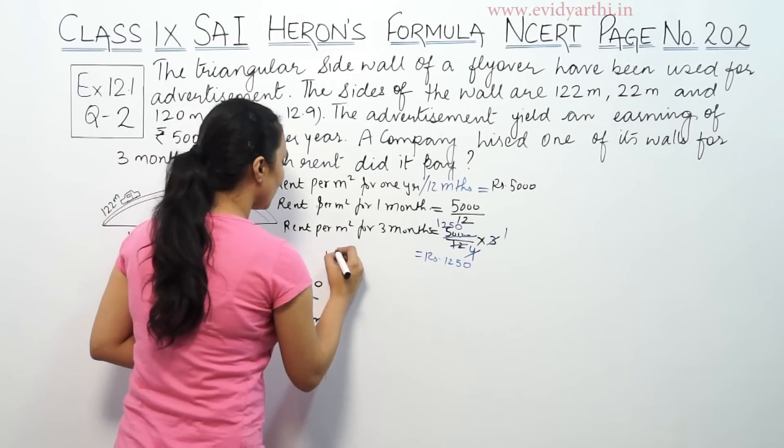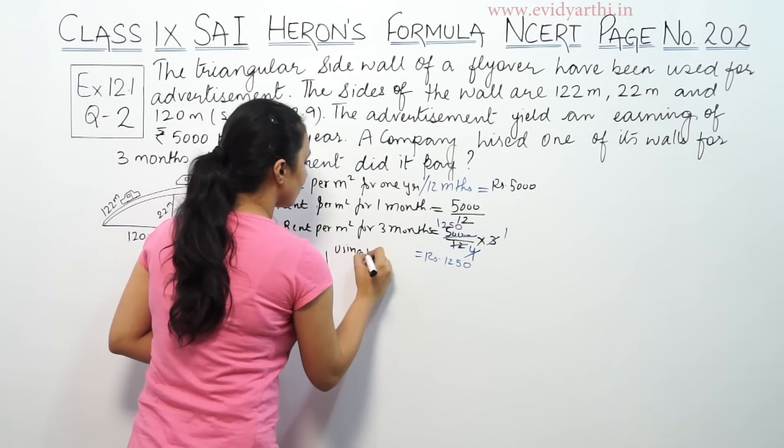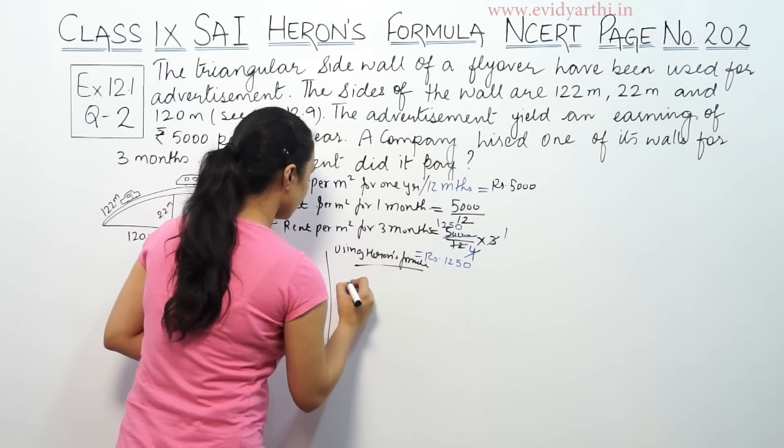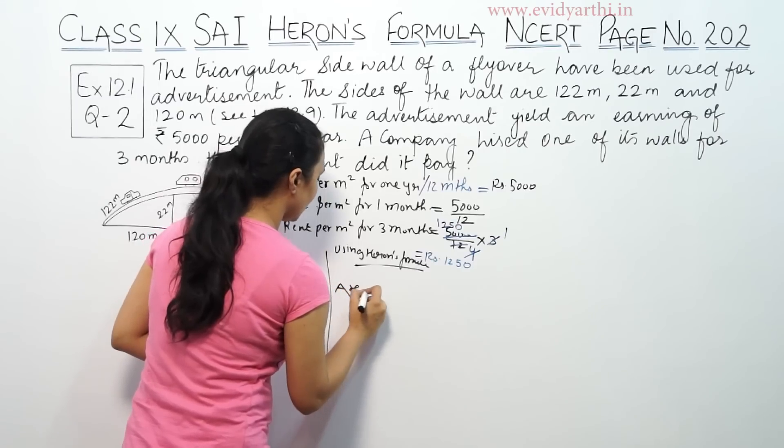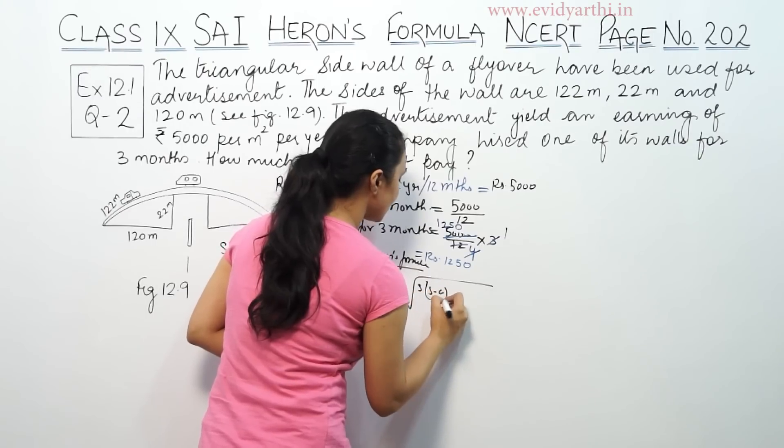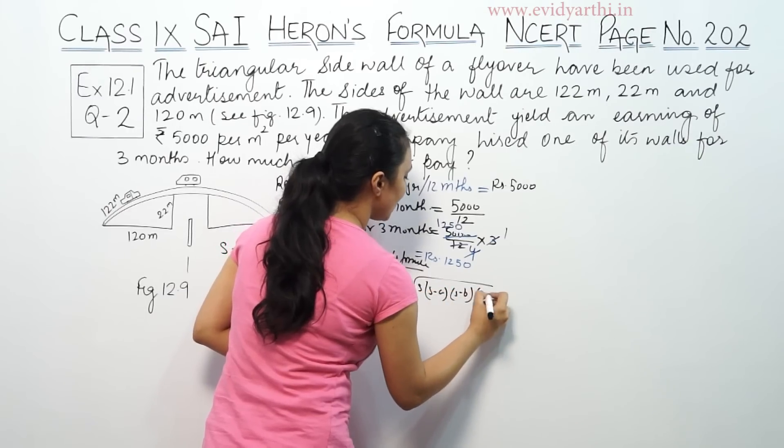So using Heron's formula, area of triangle is square root of S times S minus A times S minus B times S minus C.